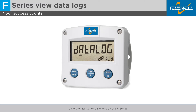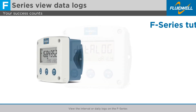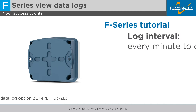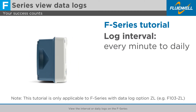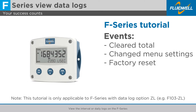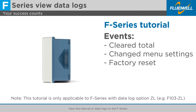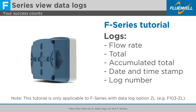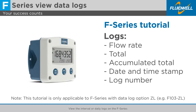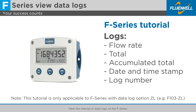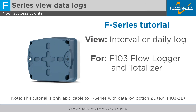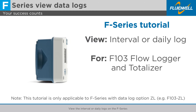When you need to easily monitor your flow measurements and historical data events over time, the logging feature on the F103 is the perfect tool for you. The log interval can be user-defined from every minute to daily. Events such as cleared total, changed menu settings, or factory reset can also be logged. Each log contains flow rate, total, accumulated total, date and timestamp, and log number. In this tutorial, we will show you how to view the interval or daily logs on the F103 flow logger and totalizer.